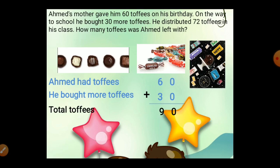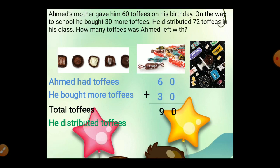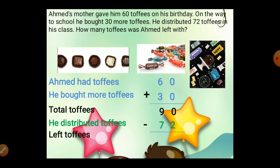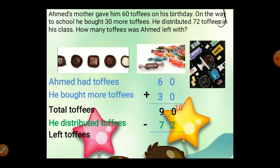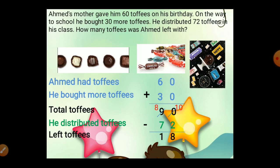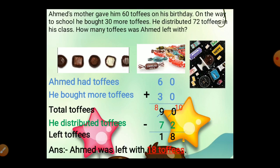Now he distributed 72 toffees, so you have to subtract 72 from 90. 0 minus 2 — not possible, so borrow 1 from the tens column. 0 becomes 10, 9 becomes 8. 10 minus 2 is 8, 8 minus 7 is 1. Our answer is 18. Ahmed was left with 18 toffees.